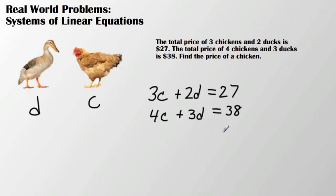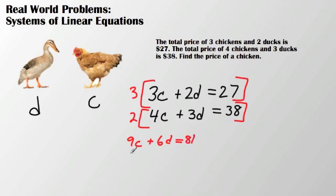I have to decide whether I'm going to use elimination or substitution. And in this case the numbers really don't come out all that evenly. So what I'm going to do is multiply my top equation by 3 and my bottom equation by 2. So if I multiply everything in my top equation by 3, I will get 9c plus 6d equals 81. And 8c plus 6d equals 76.